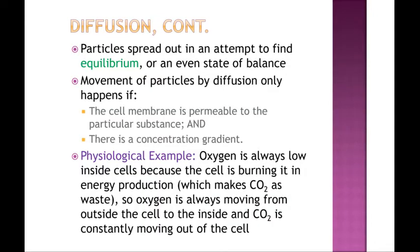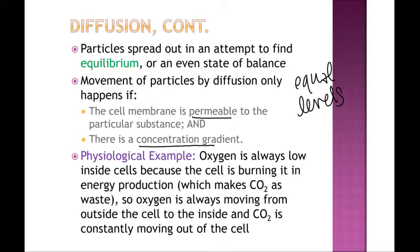The purpose of diffusion is to find a state of equilibrium. The substances and molecules inside the body want to be balanced — they want to have an equal number inside and outside, so equal levels is always the goal. So if a cell membrane is permeable, it has openings that will fit a substance, and if there's a difference inside and outside the cell, then diffusion will happen naturally.